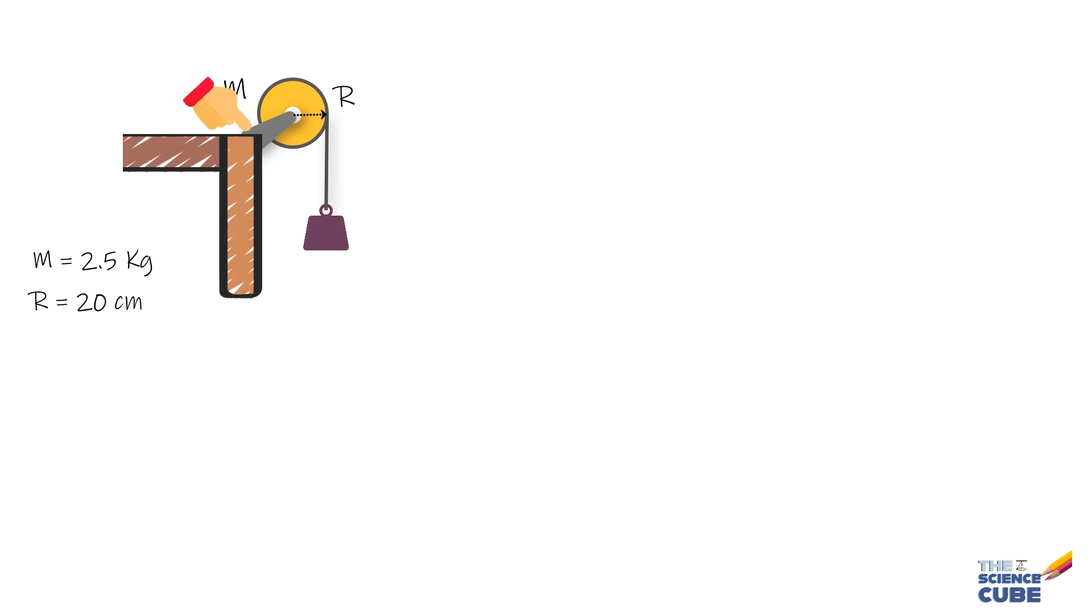We also have a block of mass m equal to 1.2 kilogram that hangs from a cord that is considered massless and is wrapped around the rim of the disc, and you have to find the acceleration of the falling block.